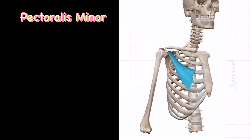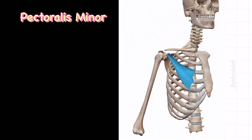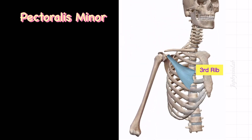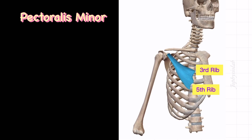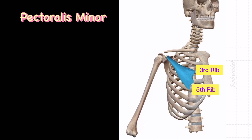The pectoralis minor muscle attachment begins with the anterior surface of the 3rd to 5th ribs of the costal cartilage, and it inserts at the medial border and coracoid process of the scapula.